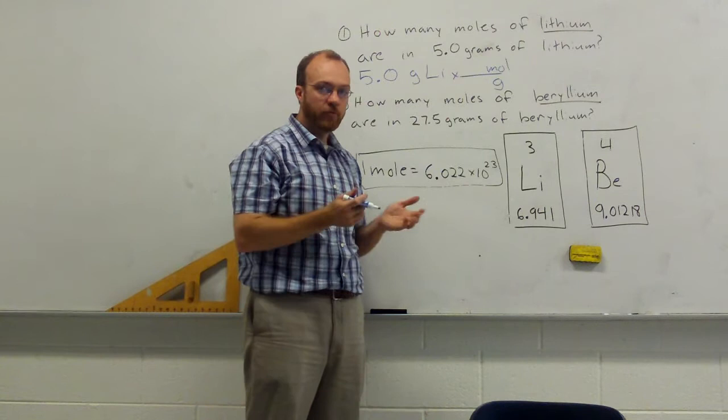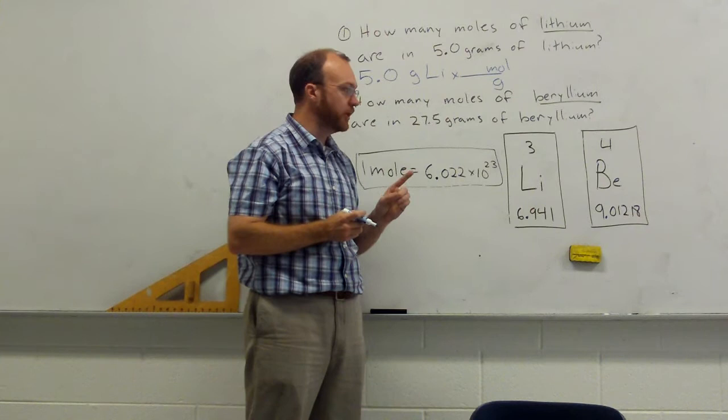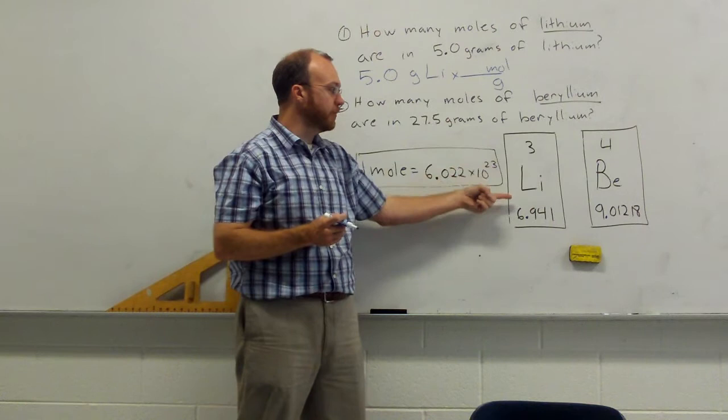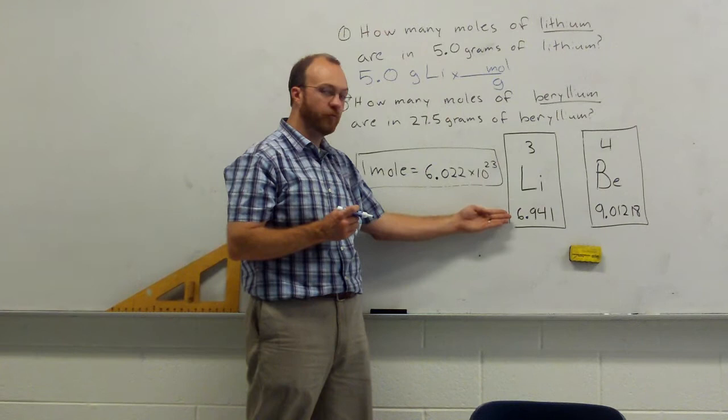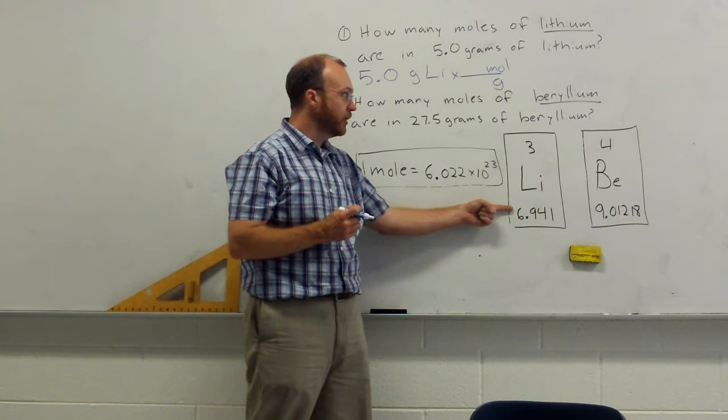And now, because we understand what a mole is, we know that we can get that by looking at the periodic table. So, if you find an entry for lithium on your periodic table, you'll see that, on average, lithium has 6.941 protons and neutrons. Therefore, one mole of lithium will have a mass of 6.941 grams. We call this the molar mass, when we read it as grams per mole.